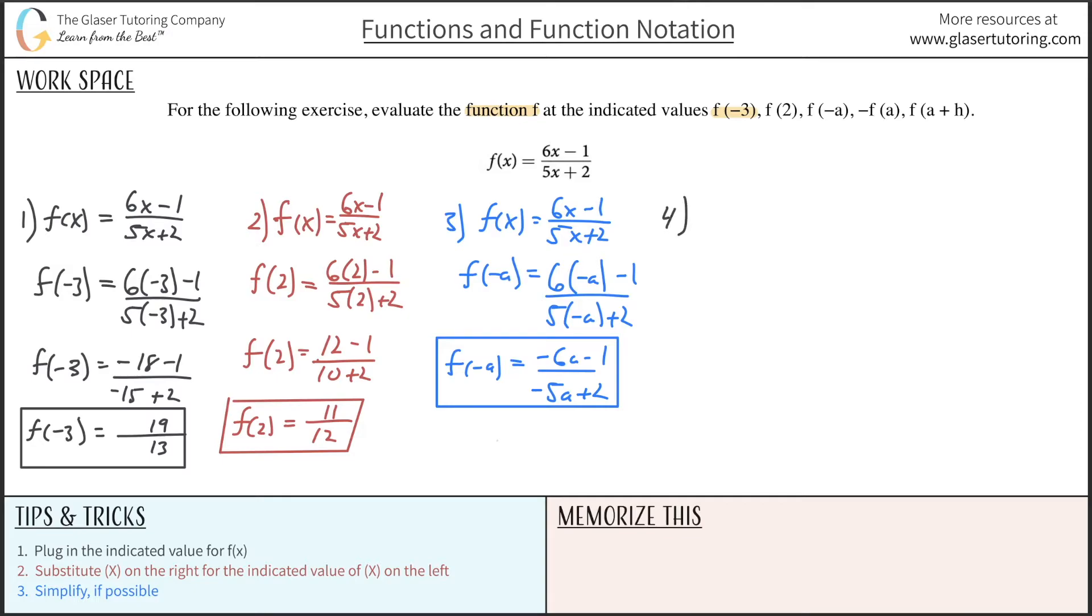Why don't we look at number 4 now? So number 4, again, rewrite it. So f of x is equal to 6x minus 1 all over 5x plus 2. And here we're now evaluating at negative f of a. Okay, so here we have f of, now, excuse me. So negative f, okay, of something.